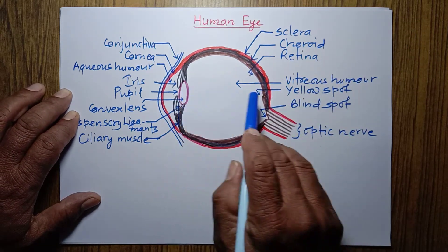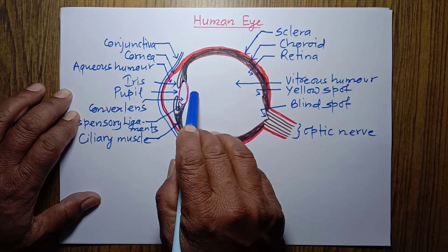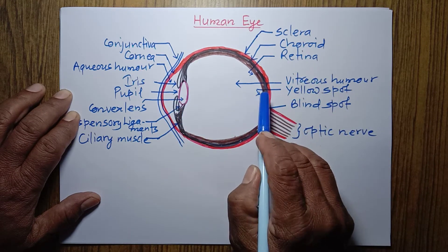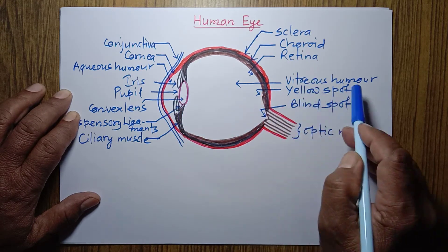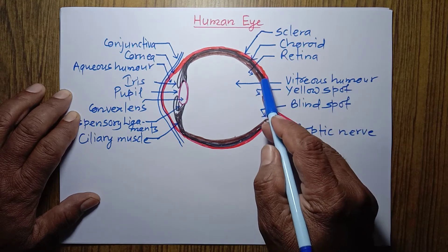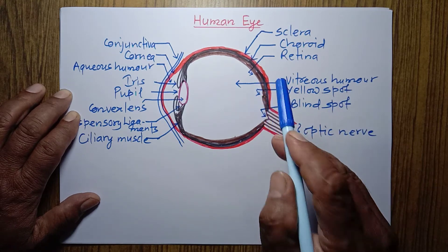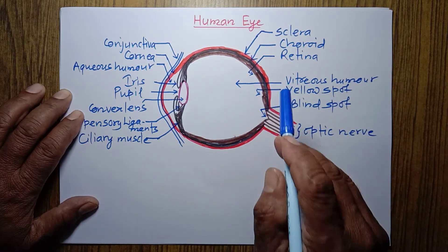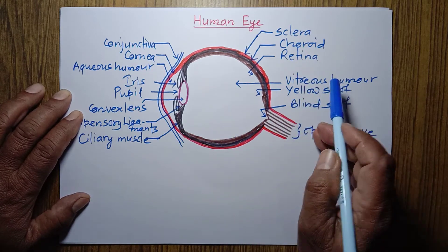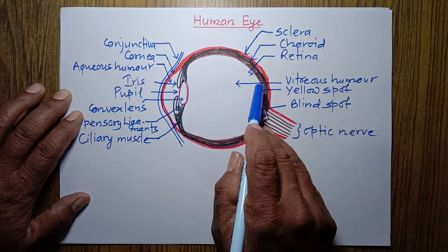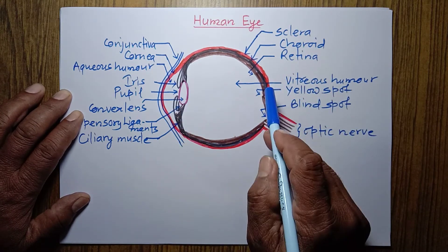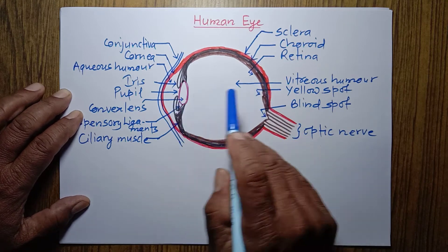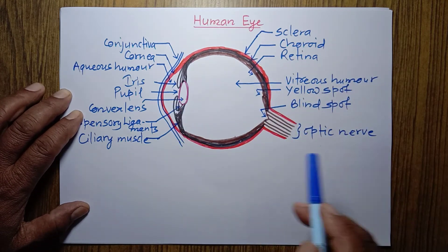Now just behind the convex lens, on the retina, there is a constriction called yellow spot. This region is richly supplied with sensory cells — the sensory cells are called rod cells and cone cells. When image falls on this region, we will be able to see that object clearly.